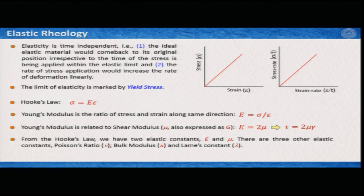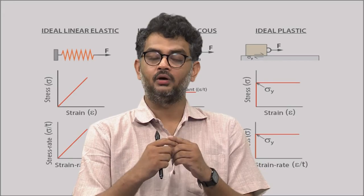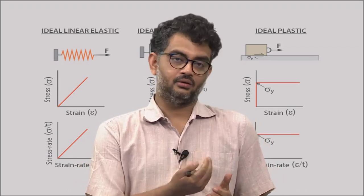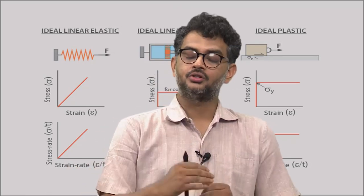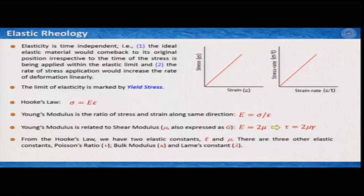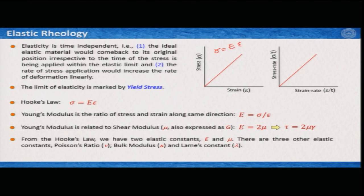Elasticity is time independent. That means it does not matter how long you keep the green bars — the spring stays at its position, and when you remove the weights, it comes back to its original position. It is not a function of time. Therefore, the ideal elastic material would come back to its original position irrespective of the duration the stress was applied, within the elastic limit. The rate of stress application would increase the rate of deformation linearly. On a stress versus strain plot, this gives us sigma equal to E multiplied by strain, so the slope is your Young's modulus.